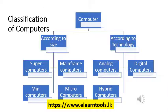Now we are going to classify the computers. There are two ways: one is according to size and the other is according to technology. If we consider size, we can classify them as supercomputers, mainframe computers, mini computers, and micro computers. According to technology there are three types: analog computers, digital computers, and hybrid computers.